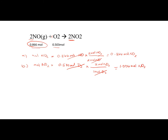Going back to the definition of the limiting reagent: the one that produces the less product is our limiting reagent. Given these two amounts of product, we have 0.866 moles of NO₂ as the lesser amount produced. Therefore, the answer to question A — the limiting reagent — is nitric oxide, NO, because NO produces the least amount of product. And for question B, the moles of NO₂ produced is 0.866 moles, since the amount of product is based on the limiting reagent, which is nitric oxide.